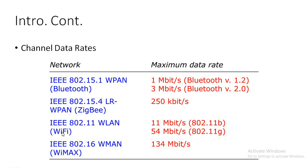Wi-Fi uses the IEEE 802.11 standard, also known as WLAN, with speeds of 11 MB per second and 54 MB per second depending on the version, and speeds may be higher in newer versions. IEEE 802.16, also known as WiMAX, has a speed of 134 MB per second.